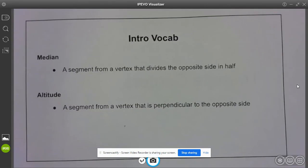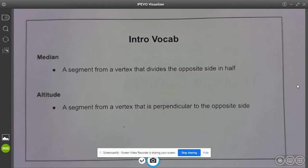Some other important vocab words are median and altitude. Median comes from the vertex and divides the other side in half, and an altitude comes from the vertex and is perpendicular to the other side.